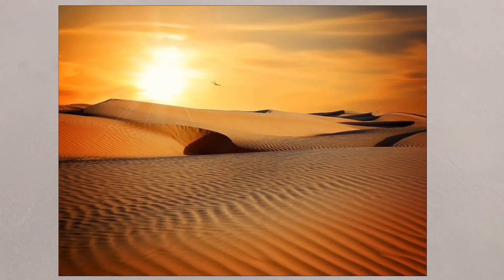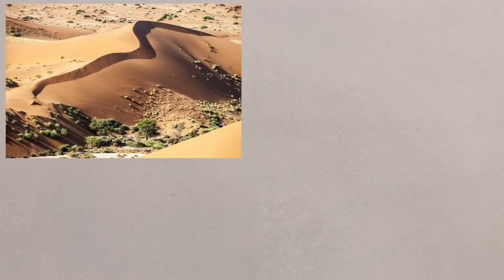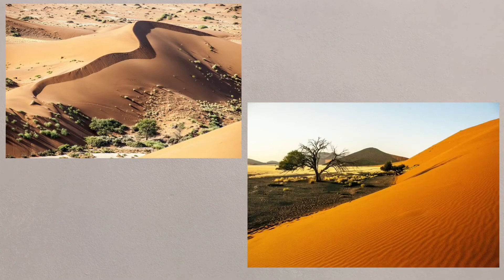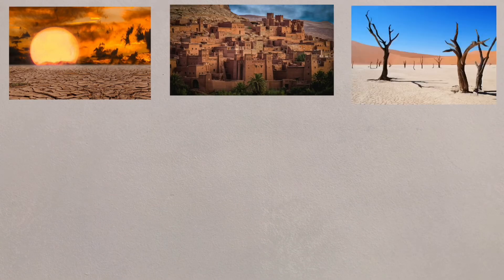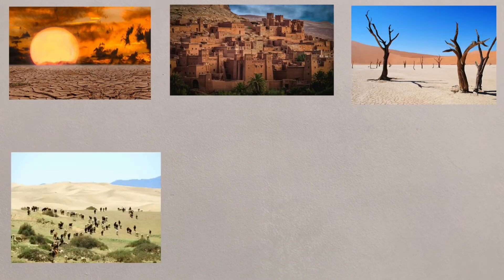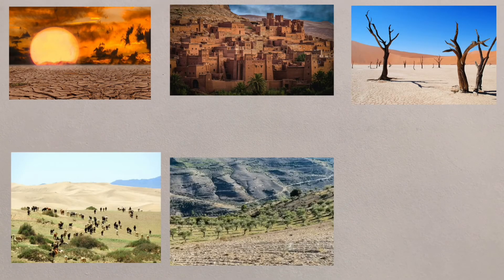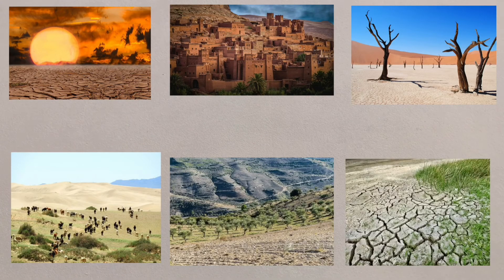There are areas on the fringe of the desert where the desert seems to be encroaching, and this is called desertification. The change in climate, population growth, deforestation, overgrazing, overcultivation and soil erosion will lead to this desertification.